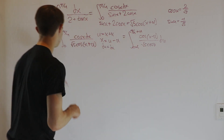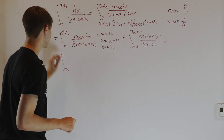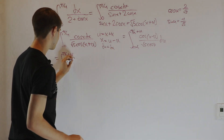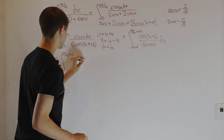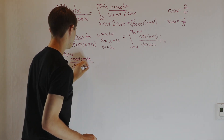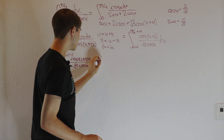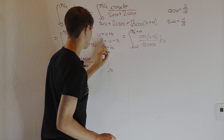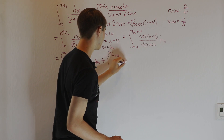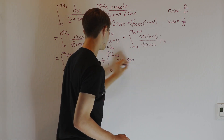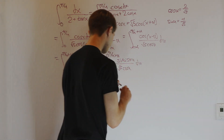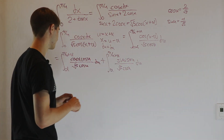Let's expand cos(u − α) using the addition formula. We get the integral from α to π/4 + α of cosine α·cos u over √5·cos u du, plus the integral from α to π/4 + α of sine α·sin u over √5·cos u du. We can do each of these integrals.